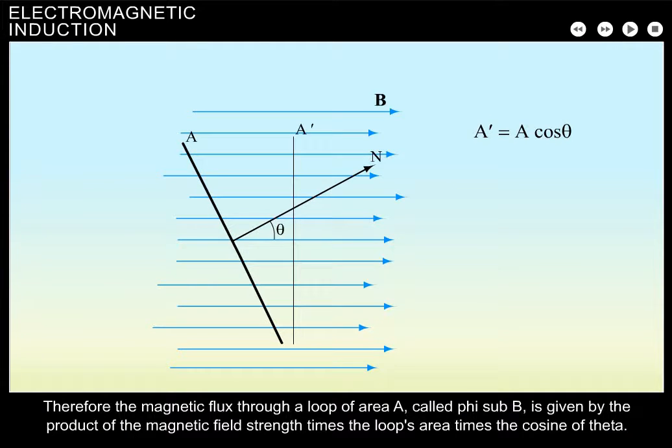Therefore, the magnetic flux through a loop of area A, called phi sub b, is given by the product of the magnetic field strength times the loop's area times the cosine of theta.